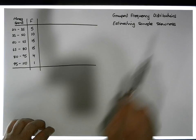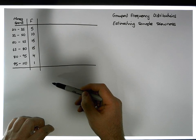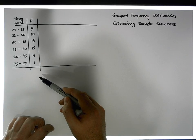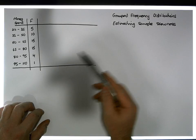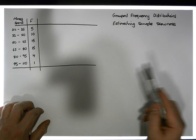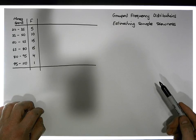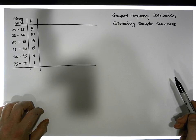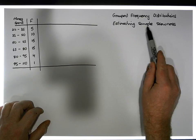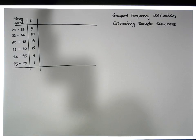Given a grouped frequency distribution, we know we could draw a histogram from it. The question is: how skewed is that histogram? Is it positively skewed, negatively skewed, or is there no skewness at all — is it symmetrical? And how do we estimate this particular measure of sample skewness?